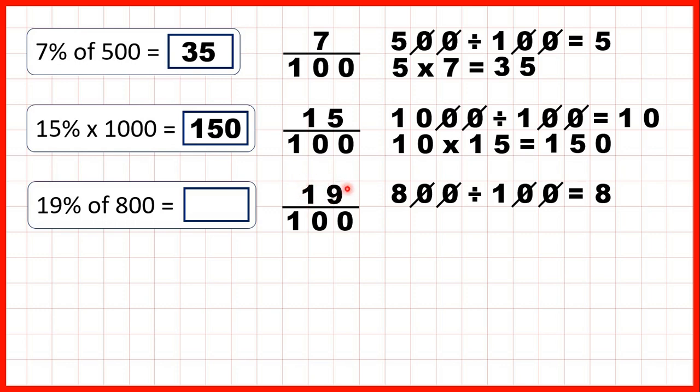So now we need to take that 8 and multiply it by the numerator. So we need to work out 8 times 19. 9 times 8 is 72, so 7, 2. 1 times 8 is 8, plus 7 is 15, so we have 152 as our answer.